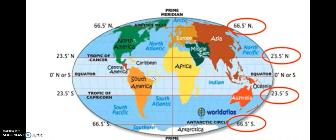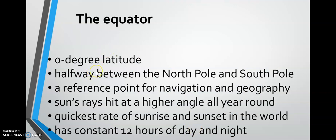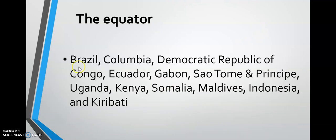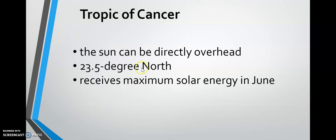When it rains frequently, we have the wet season; when rain is scarce, we have the dry season. The equator is located at zero degrees latitude and is halfway between the north pole and the south pole. It is a reference point for navigation and geography. The sun's rays hit at a higher angle all year round here. The equator also has the quickest rate of sunrise and sunset in the world, with a constant 12 hours of day and night.